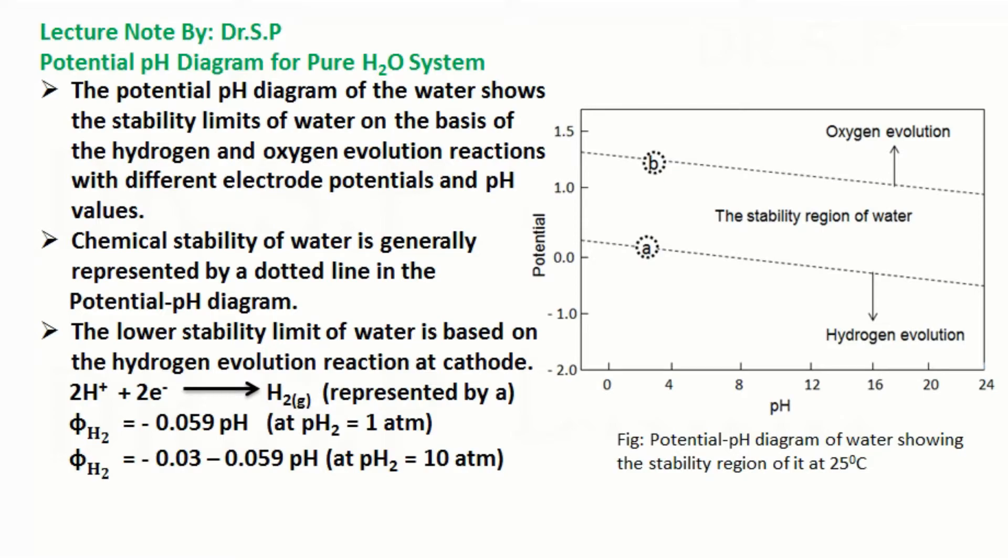Chemical stability of water is generally represented by a dotted line in the potential pH diagram. The lower stability limit of water is based on the hydrogen evolution reaction at cathode, represented by a line in the figure.